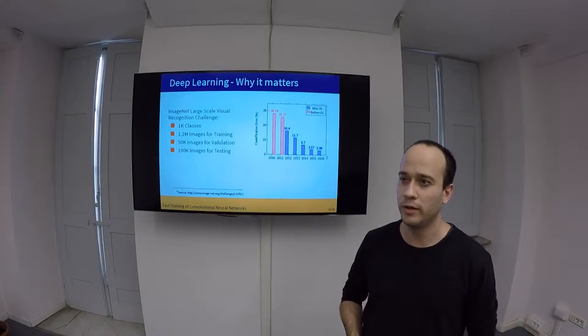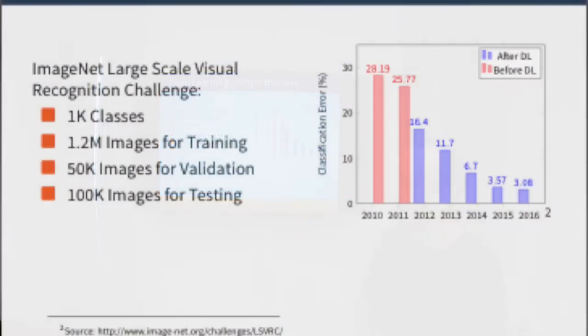Actually, as you can see here, before 2012, which is when AlexNet came around, the top-five error rate in the object classification task was over 25%. With AlexNet, this dropped down to 16.4%.